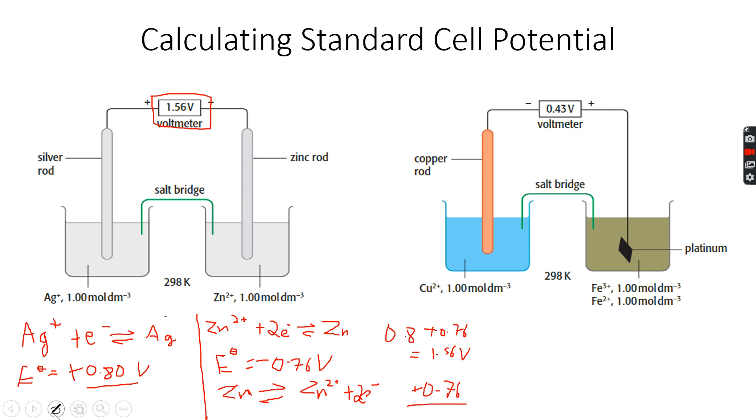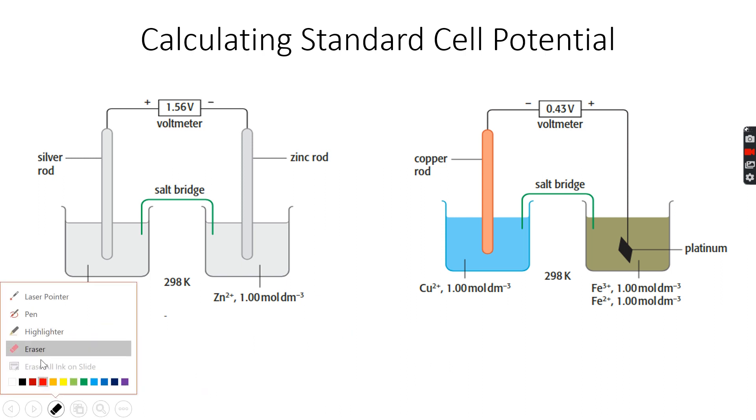Now let's do this for the other cell, which is the copper-copper and Fe³⁺ and Fe²⁺. So this one on the right—for this half cell, it's Cu and the E° is plus 0.34 volts.